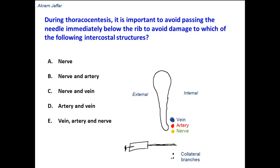Now let's go back to the question. To avoid damage, it's important to avoid passing the needle immediately below the rib — to avoid damage to which of the following intercostal structures? Evidently, from the description, it's to avoid damage to all these structures. It's not only the nerve, not just the nerve and artery, not just the nerve and vein — it's the vein, artery, and nerve. All three of them are likely to be damaged.